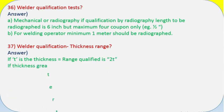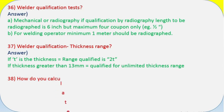Question 37: Welder qualification thickness range? Answer: If T is the thickness, range qualified is 2T. If thickness greater than 13 mm, qualified for unlimited thickness range.